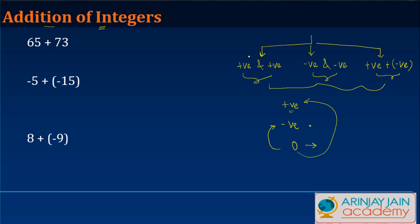So, let's take them one by one. Let's talk about two positive integers. So, if I look at the first example that I have, I have 65 and 73, and both these are positive integers. So, whenever you add two positive integers, what you do is you just simply do an addition of these two.